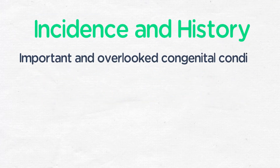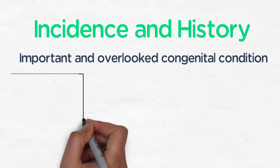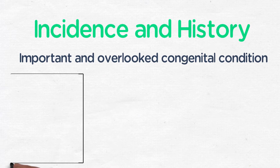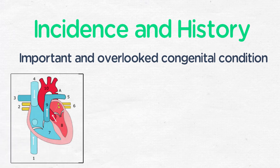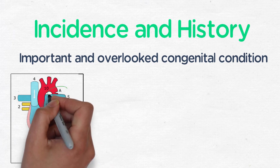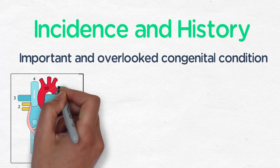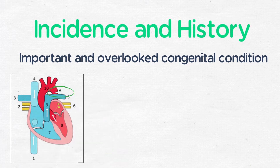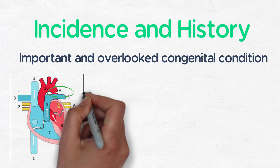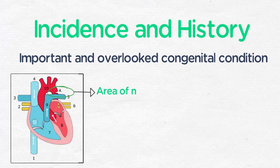Coarctation of the aorta is an important and often overlooked diagnosis in congenital heart disease. The most common site of a coarctation is at the aortic isthmus or the juxtaductal region. Most commonly there is a discrete area of narrowing that results in a restriction of blood flow.